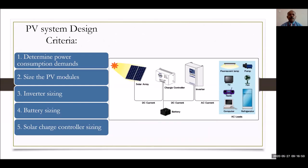Now our main topic — PV system design criteria. There are five steps to consider for designing a perfect solar power plant for your house. Step one is to determine power consumption demands — what electrical appliances are you going to use in your house? Based on those appliances, you calculate the total watts for each appliance and then the total watts for all components in the solar power plant based on electrical appliances. That is the first step.